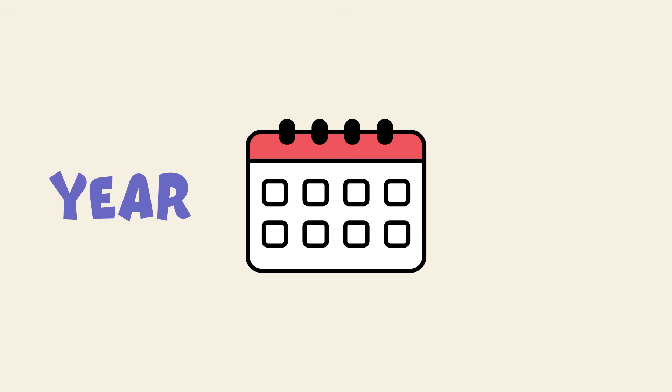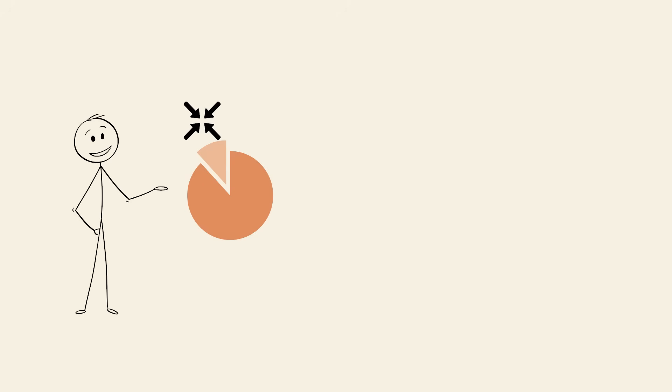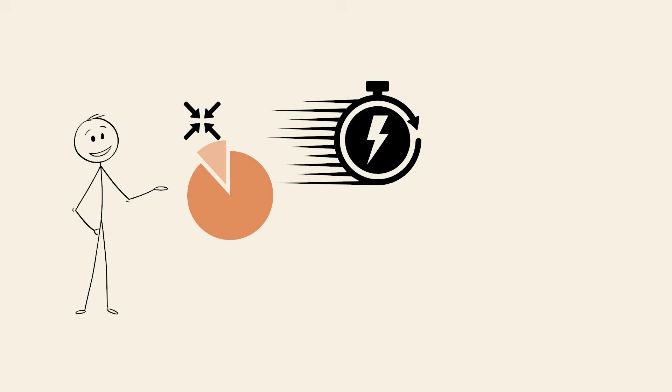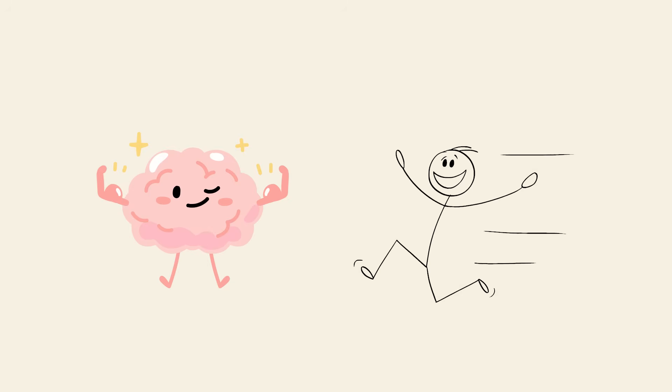Also, each year becomes a smaller percentage of your total life lived, so one year at age 10 is 10% of your life, but only 2% at age 50. That shrinking proportion makes it feel like time is speeding up. Want to slow it down? Seek out novelty. Travel somewhere new, learn a skill, or break your routine. Your brain will take more notice, and time will feel fuller again.